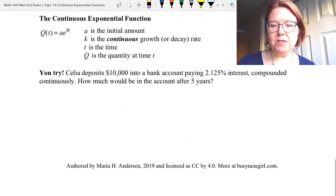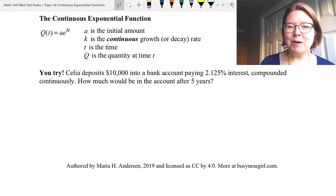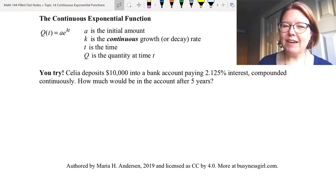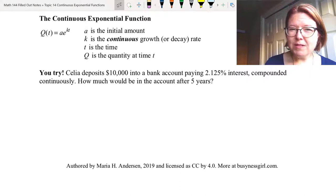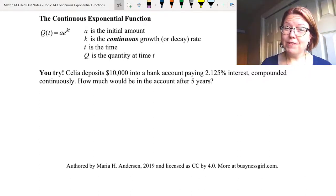Let's see if you can use this formula. We're going back to a banking problem. Celia deposits $10,000 into a bank account paying 2.125% interest, compounded continuously. How much will be in the bank account after five years? Use that continuous exponential function and see if you can figure it out. Pause the video, come back when you're finished.